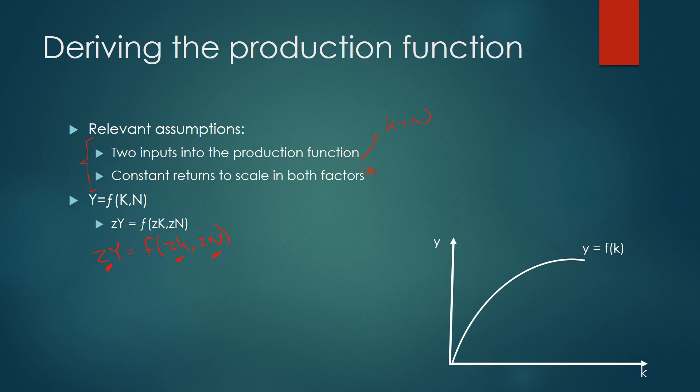So that's the basic idea of constant returns to scale and that's actually really useful for deriving this production function over here. And the reason for that is that we can use this rule but actually divide by N. So let's just divide by N in our production function and we know that since we've got constant returns to scale we can actually do this mathematically.